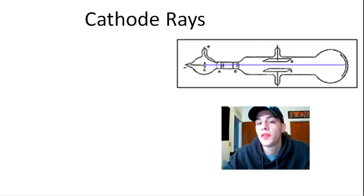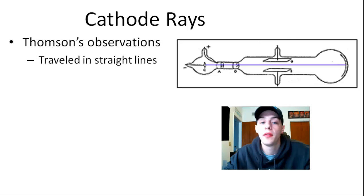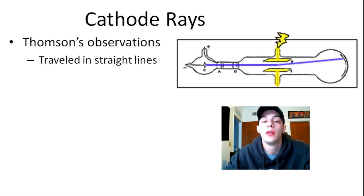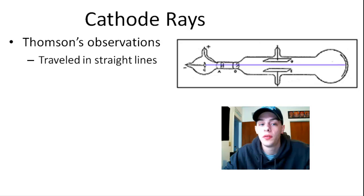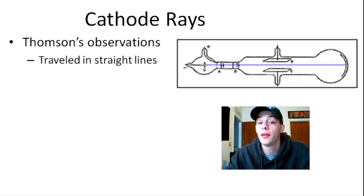So let's talk about Thompson's actual experiments here. What he observed were a couple of things about cathode rays. First, he observed that they traveled in straight lines. So this was significant because this suggested his speculation that they were particles. If they were waves, then you probably would have seen some kind of interference pattern or something characteristic of waves, but they didn't do that. They traveled in straight lines, so that supported the idea that they were particles.